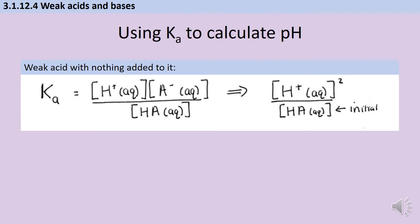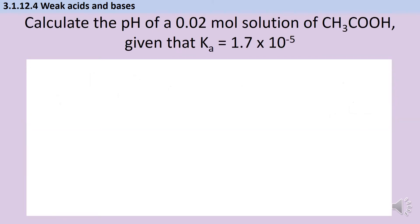The second assumption is that because the amount of dissociation is very small, the initial concentration of the undissociated acid is treated as constant. So if the concentration of ethanoic acid started at 0.2 mol dm⁻³, even though it decreases by a tiny amount as some dissociates, we just ignore that and keep using 0.2. Now let's look at some questions to see how we calculate pH using Ka.